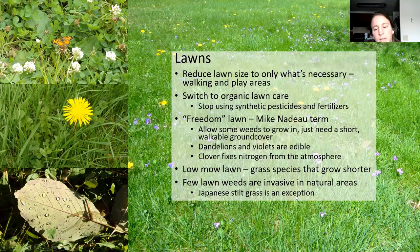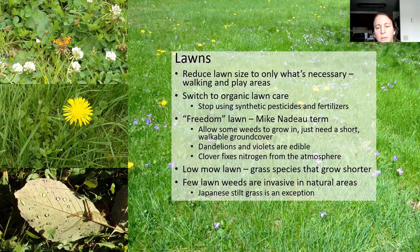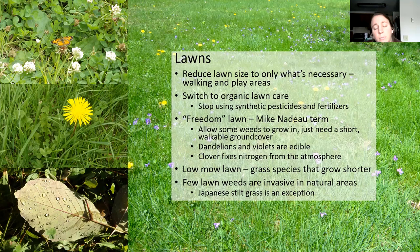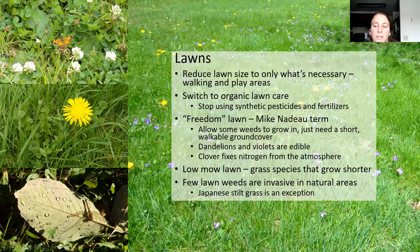Japanese stilt grass is one invasive plant that can come into natural areas and grow in lawns, so that one you would want to remove if it comes in. Weeds like dandelions and violets are also edible — if you have a salad growing in your lawn, that's pretty helpful. Clover also fixes nitrogen from the atmosphere, adding nutrients to your soil.